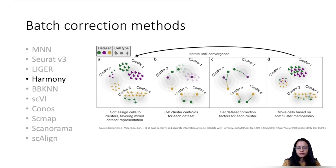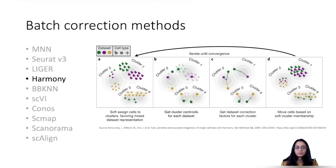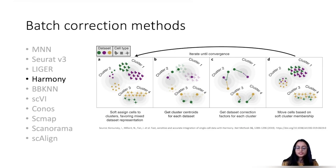I will add the link to the Harmony paper in the description below. I want to point out a major difference between Harmony and Seurat's method. Seurat's canonical correlation analysis identifies anchors in each dataset and returns an integrated object holding batch-corrected expression values for all cells. In contrast, Harmony only computes corrected dimensionality reduction values — it does not calculate corrected expression values, return an integrated object, or alter the raw data or scale data slots. These corrected dimensionality reduction values are called embeddings.